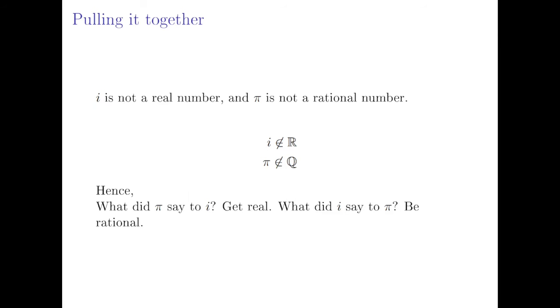And pi is not rational. Now the proof of this is beyond the scope of this video, but it is not possible to represent pi as the fraction of two integers, so that is the fraction of two whole numbers. So i is not real and pi is not rational.